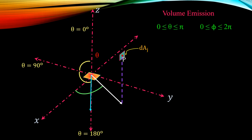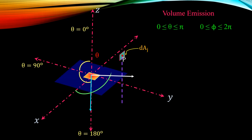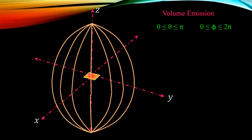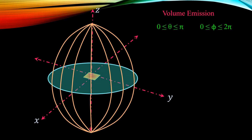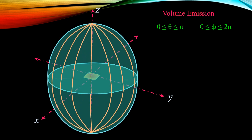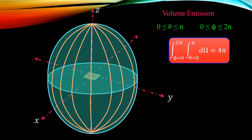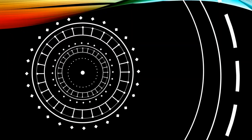So theta can further increase to 180 degrees, reaching the negative z-axis. Thus theta varies between 0 and π for the volume emission case. Similar to the surface emission case, phi can form a complete 360 degrees or 2π, as emission can take place in all directions along the xy-plane. If we draw a 180-degree angle and rotate it along the phi angle 2π, we get a complete sphere, and the solid angle for volume emission comes out to be 4π, which is the area of a sphere.